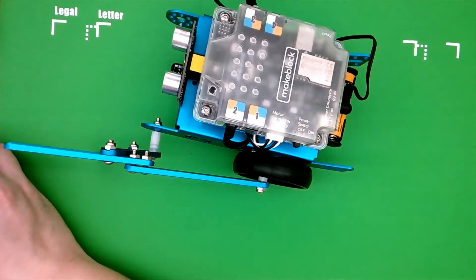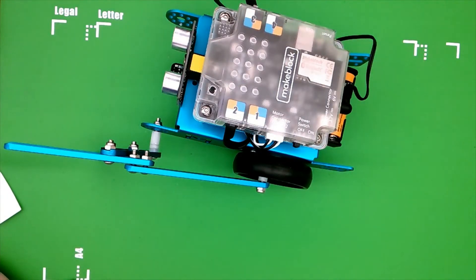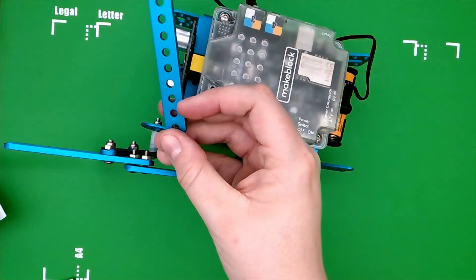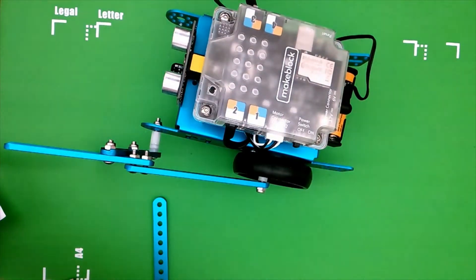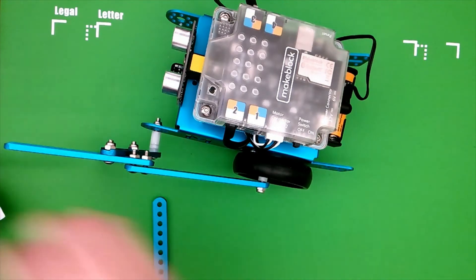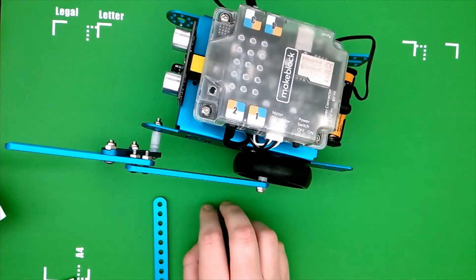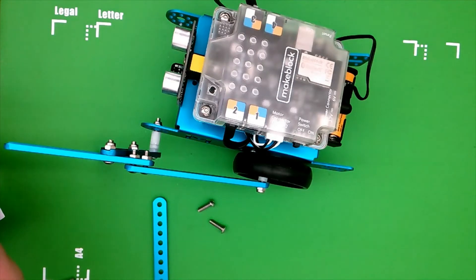Okay, now we're moving on to step number five. We're going to attach another blue beam, beam 76, so this one. And then you'll need two more 14-millimeter screws and two more lock nuts.